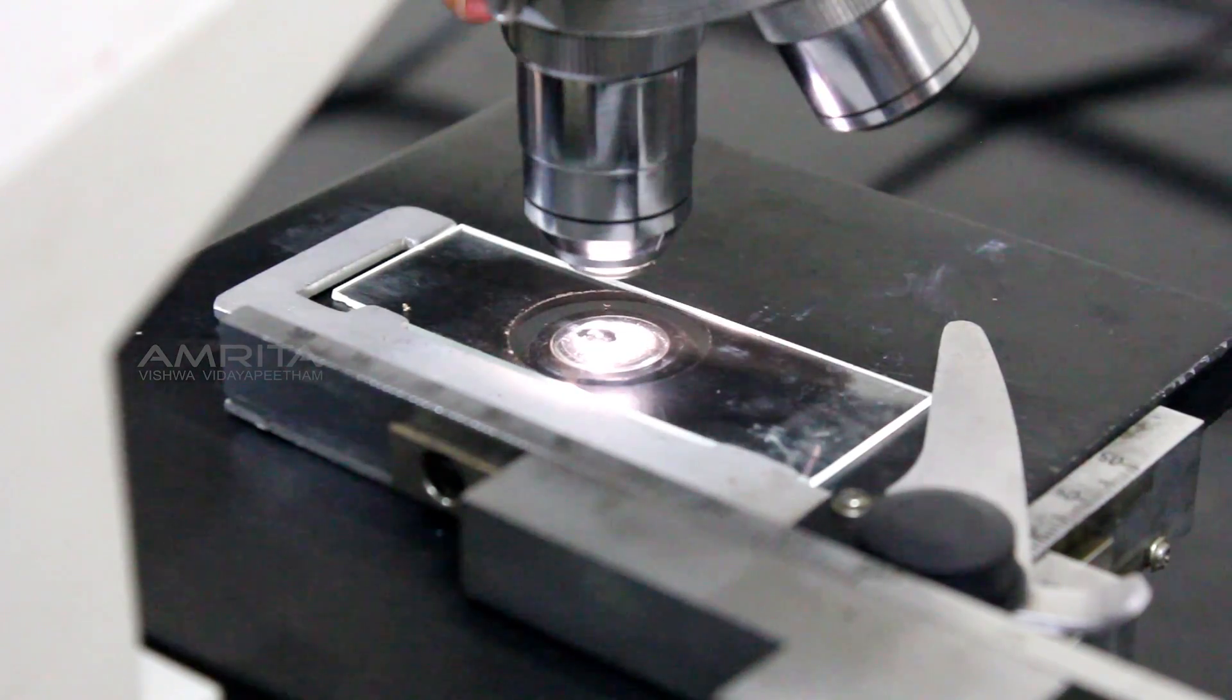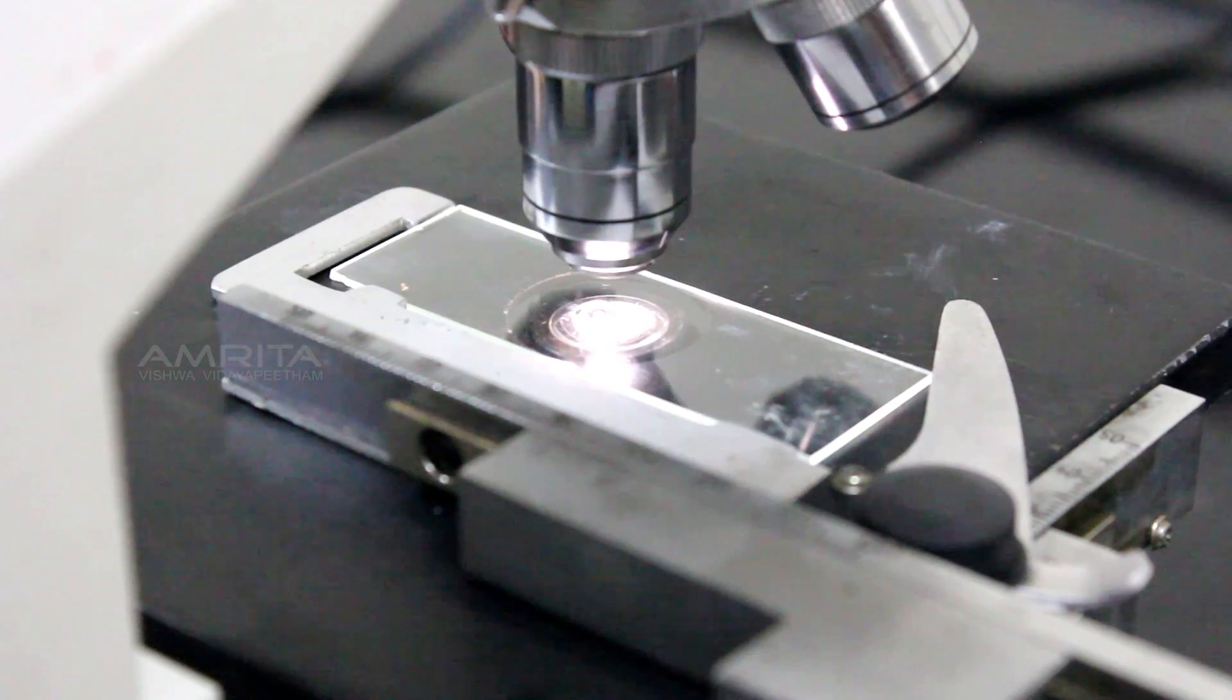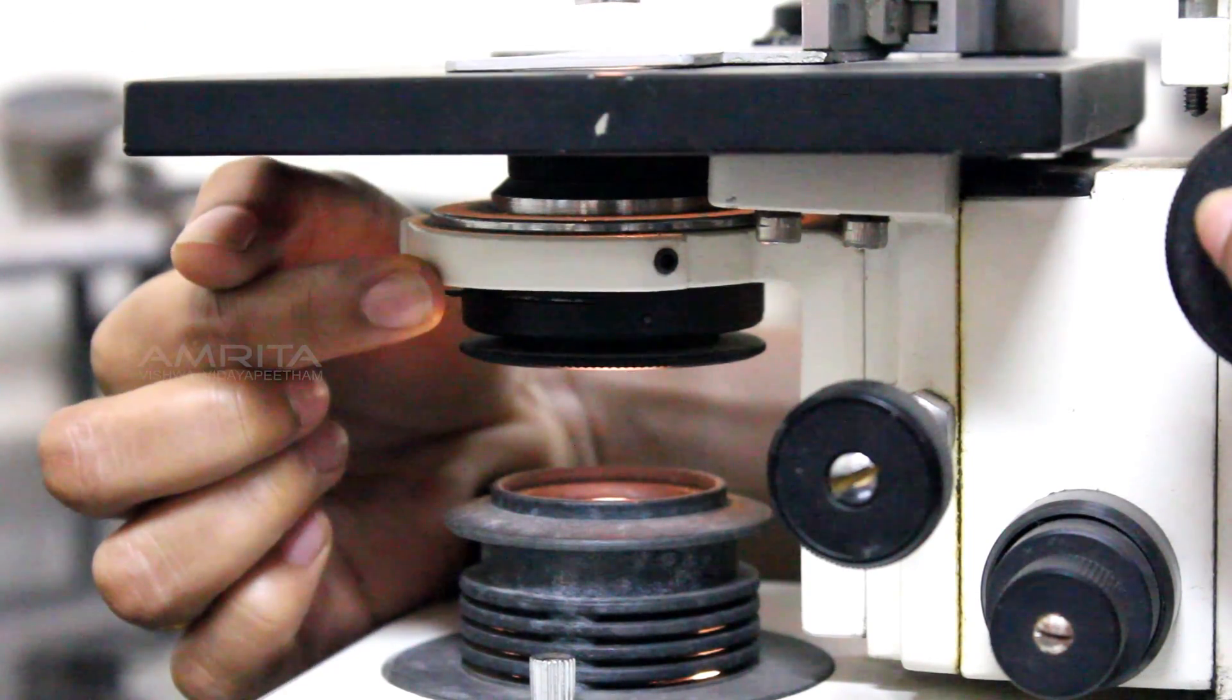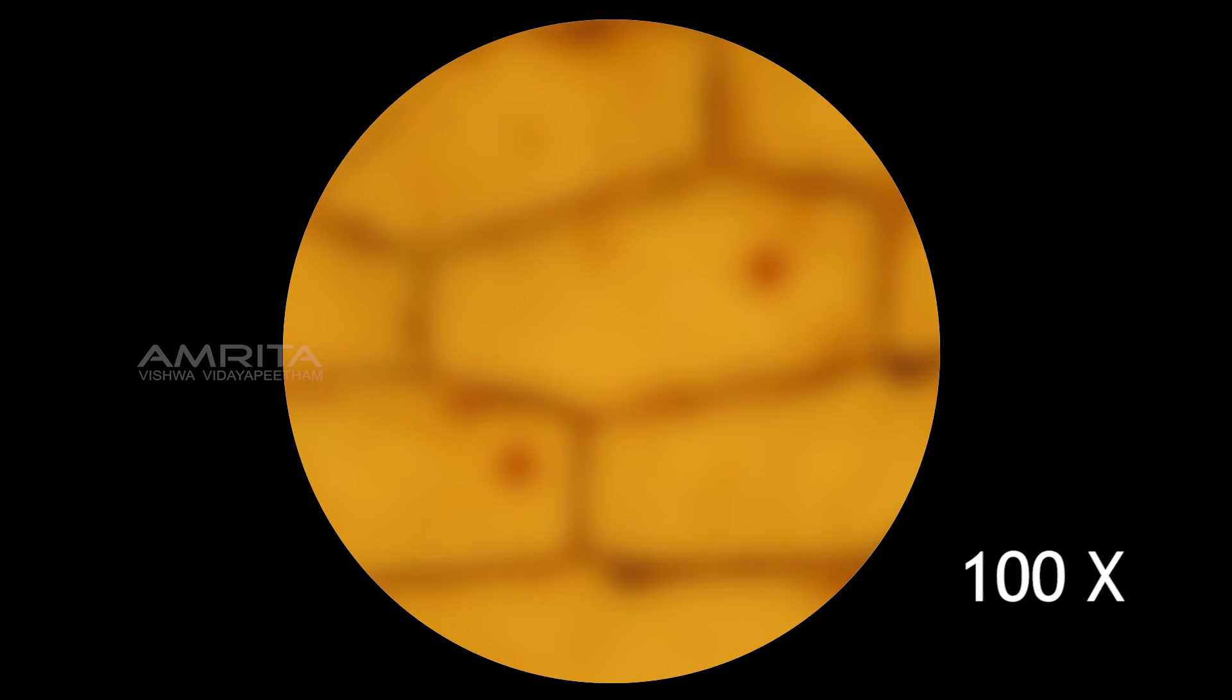Again rotate the nose piece such that 100x oil immersion objective touches the oil. Then open the iris diaphragm completely and adjust the fine adjustment knob until the images become clearer.